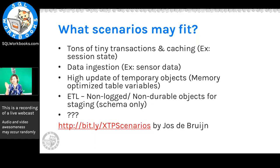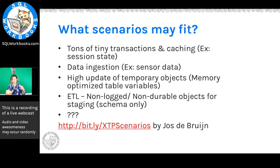Within in-memory OLTP, you also have the ability to create non-durable objects — if the power gets cut, the data is all lost. There are cases where we actually want this. A lot of times we're loading data and manipulating it, and if something goes wrong we're just going to restart the whole process — we don't care if the data is lost, and we don't want the overhead of logging. Non-durable objects can be great for this. Aaron Bertrand has written about testing processes where that could be a win.